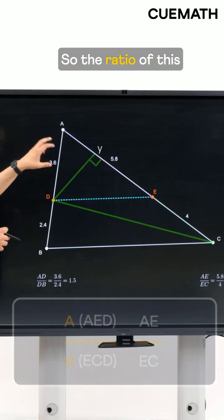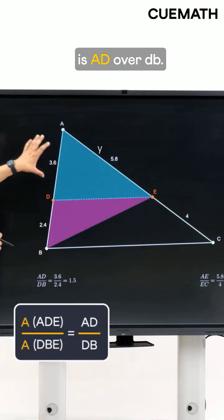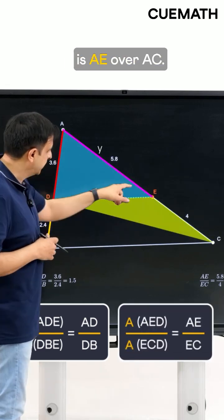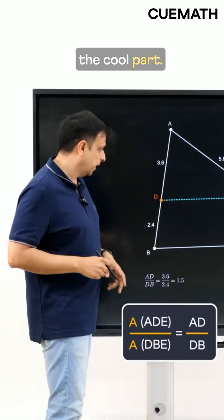So the ratio of this area to this area is AD over DB. The ratio of this area to this area is AE over EC. Now here's the cool part.